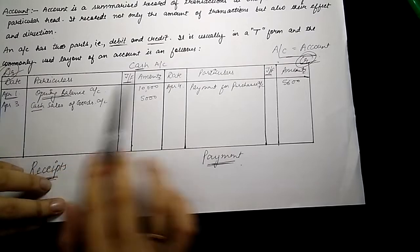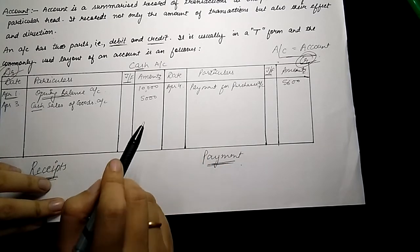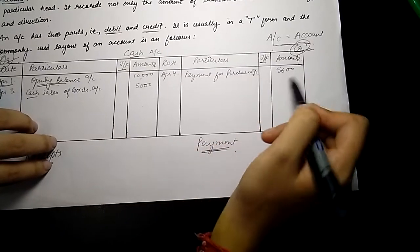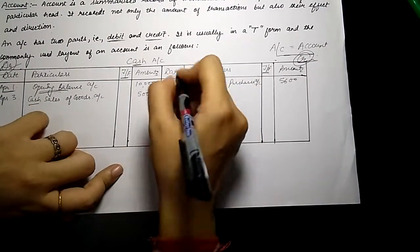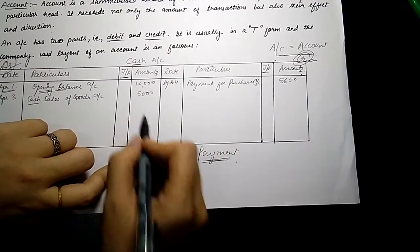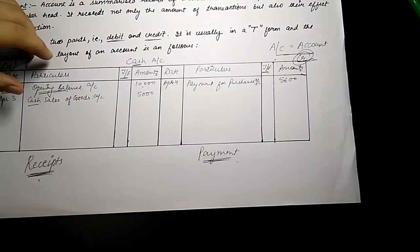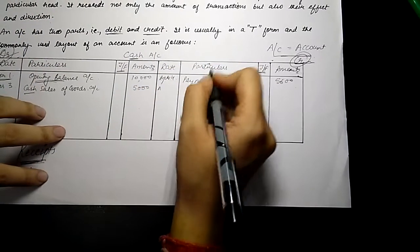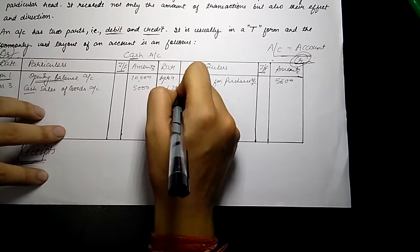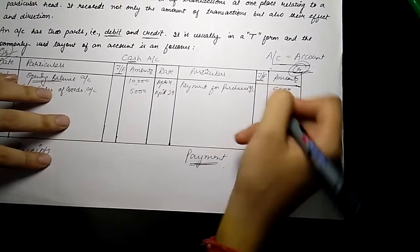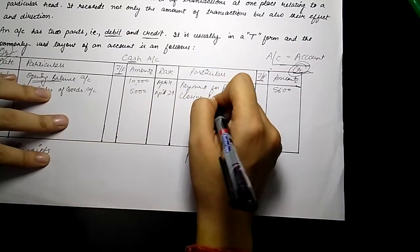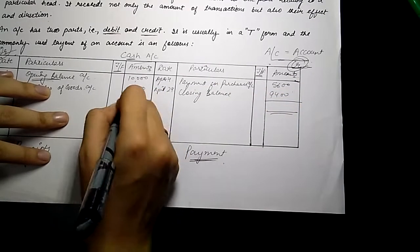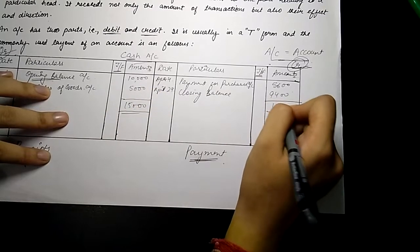Always remember that both sides of the account will be equal. We studied in accounting equations that debit and credit are always equal. We can see here 15,000 on the debit side and 5,600 on the credit side — this is not equal. So we assume the difference of 15,000 minus 5,600 equals 9,400 as our closing balance. We write closing balance of cash as 9,400, which makes both sides equal at 15,000.